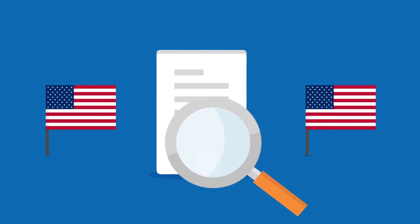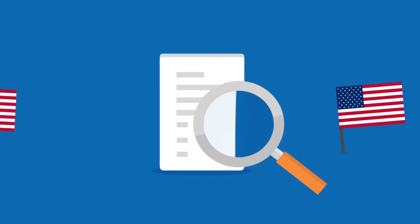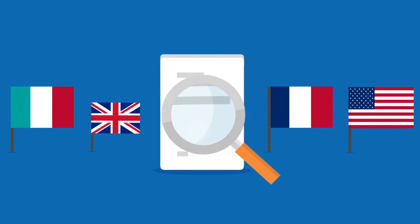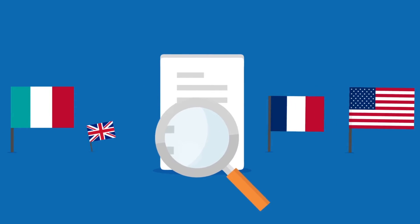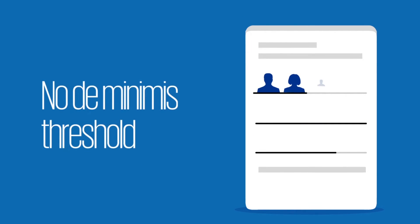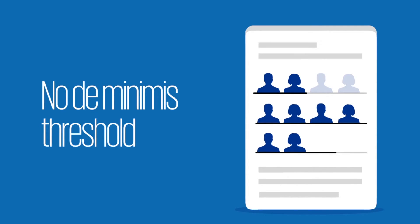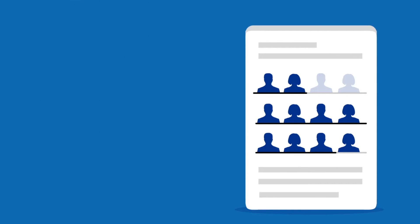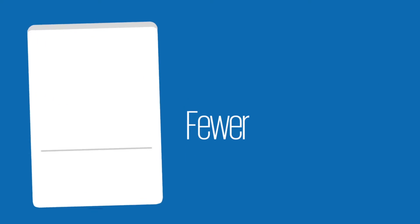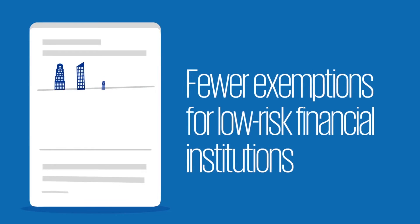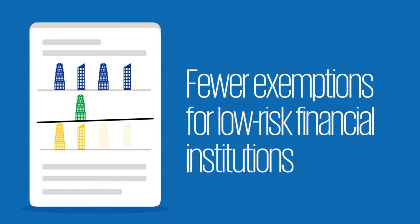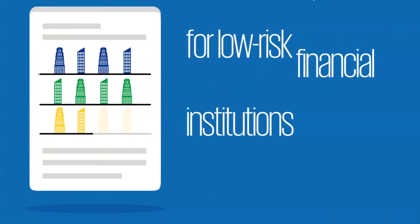So what's actually changed? FATCA only requires you to identify and report certain US account holders, whereas the CRS requires reporting of certain non-resident account holders of all countries participating in the standard. The CRS doesn't give you the option of electing a de minimis threshold for individuals' account balances, therefore increasing the number of customers in scope for further due diligence and reporting. It also has fewer exemptions from reporting financial institution status than under FATCA, so some deemed compliant entities under FATCA will be reporting financial institutions under the CRS.